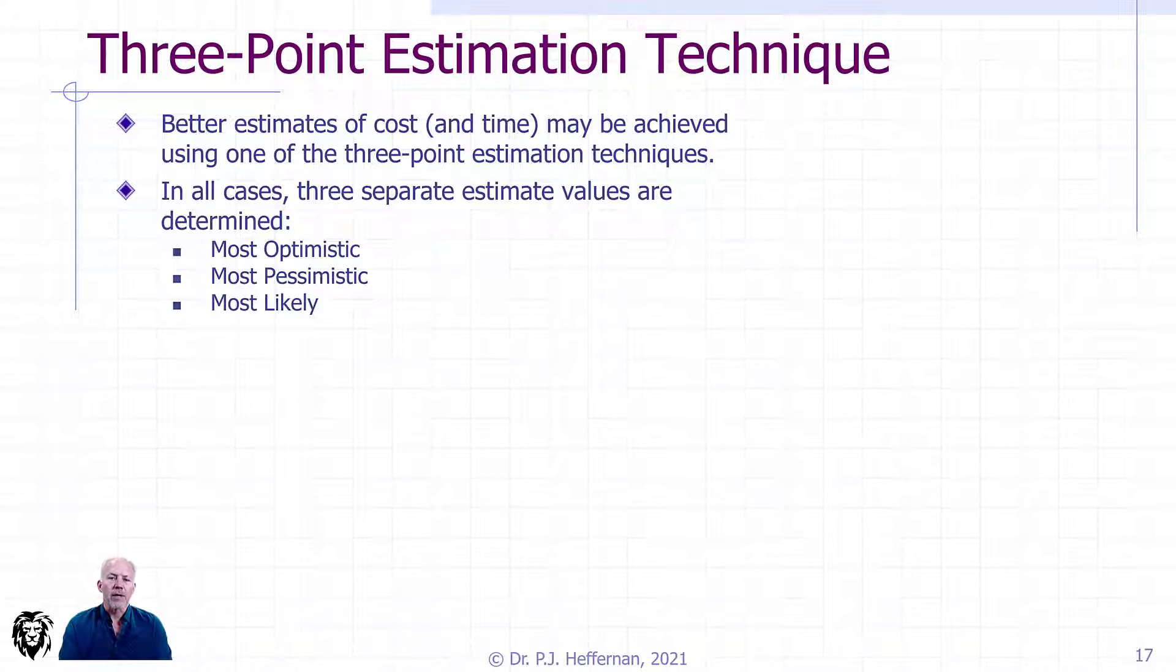There are a couple different ways we can do it. We can use the basic three-point technique and then we'll talk about a more sophisticated use of the PERT technique. They all use the same fundamental basis, which is three estimates based on the most optimistic, the most pessimistic, and the most likely.